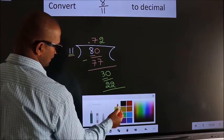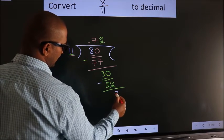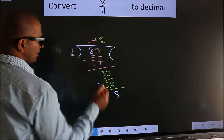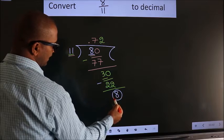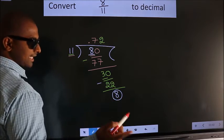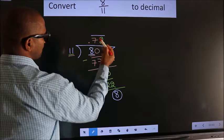Now we subtract. We get 8. Remember, earlier we had 8. We got 8 again. That means we get bar on these two numbers.